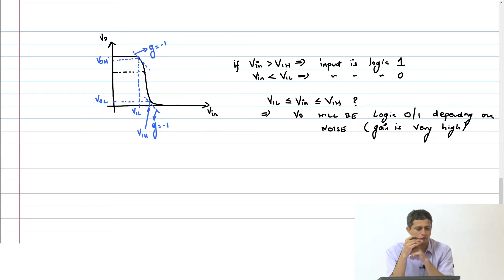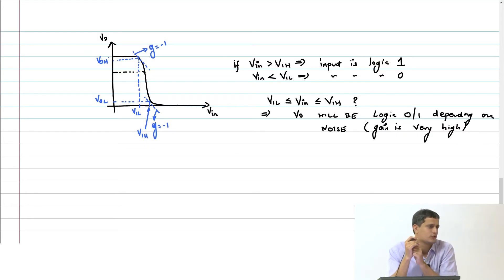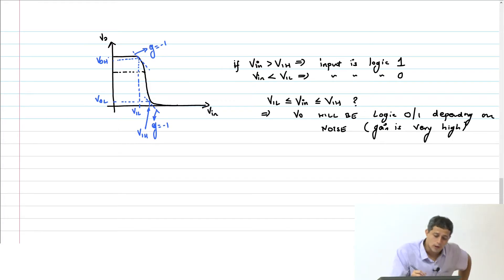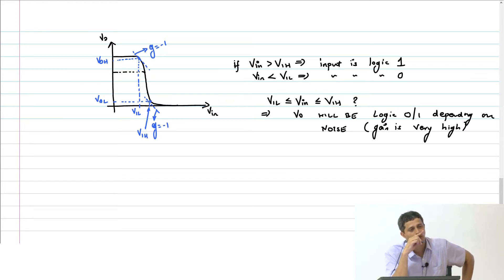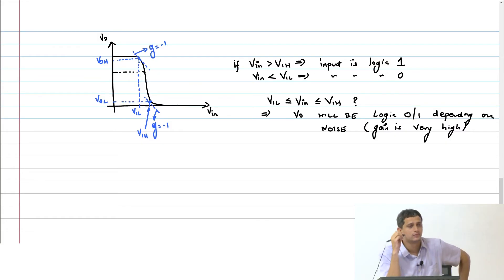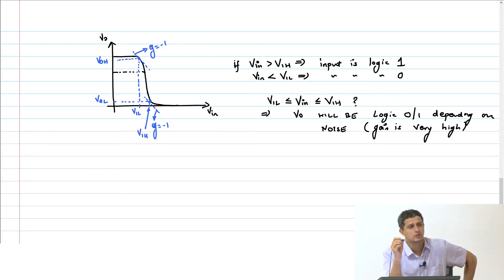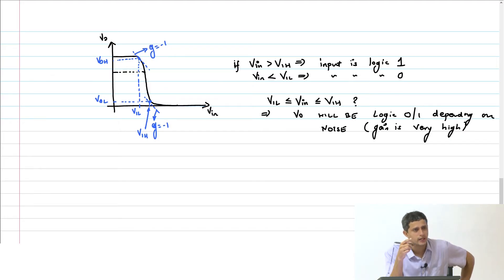Our aim is to find these two points V_iL and V_iH, and then the corresponding V_OL and V_OH. How do I go about doing that? Suppose I want to find these two points of intersection — what region of operation is my NMOS and PMOS? At V_iL, NMOS will be in saturation and PMOS in linear. We write this equation out, then differentiate it and equate the gain to minus 1.